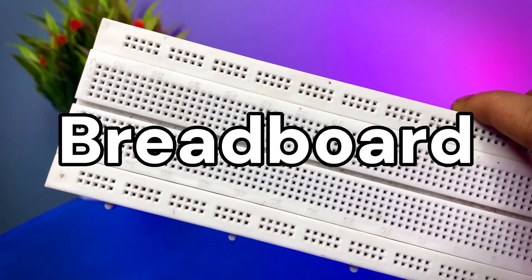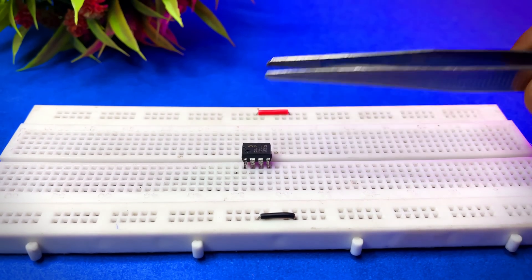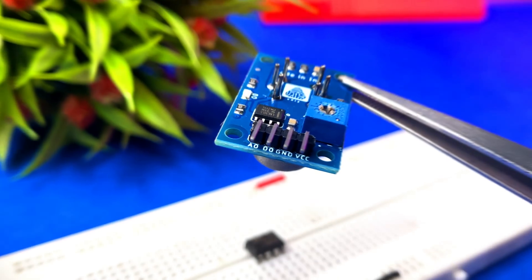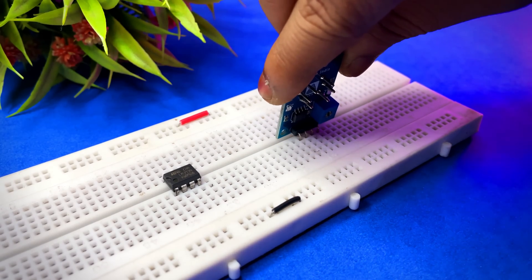Now let's start assembling everything on the breadboard. I am placing the IC first. Here I am using VCC, ground, and digital output pin for this project. Now I am placing MQ6 sensor on breadboard.